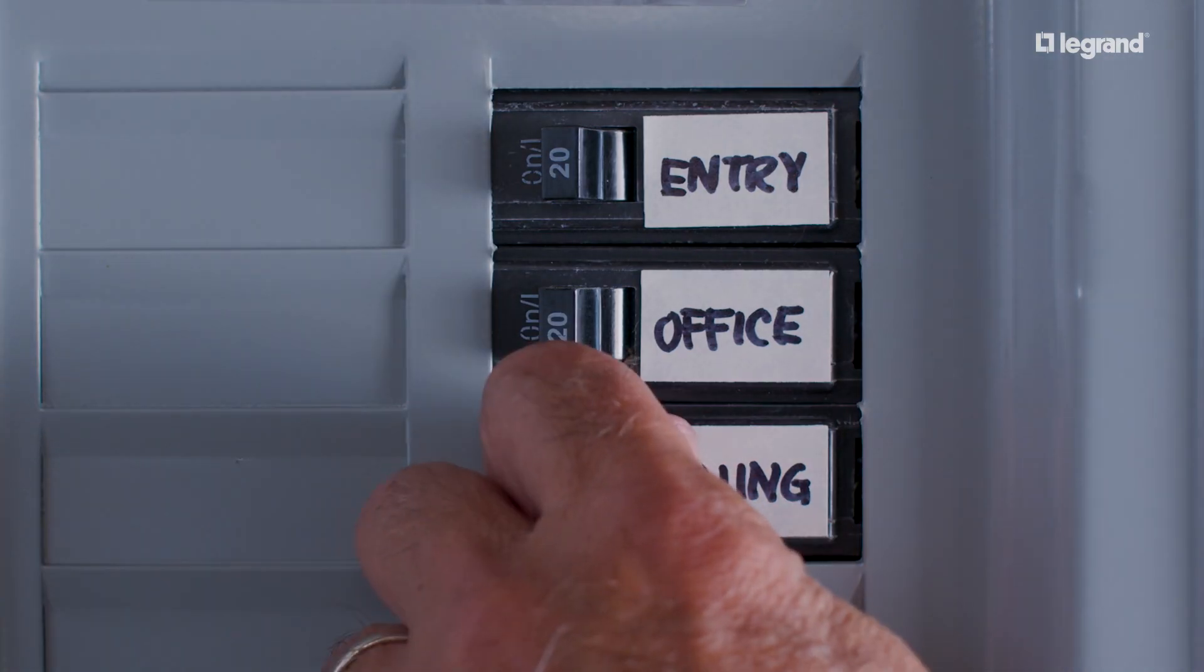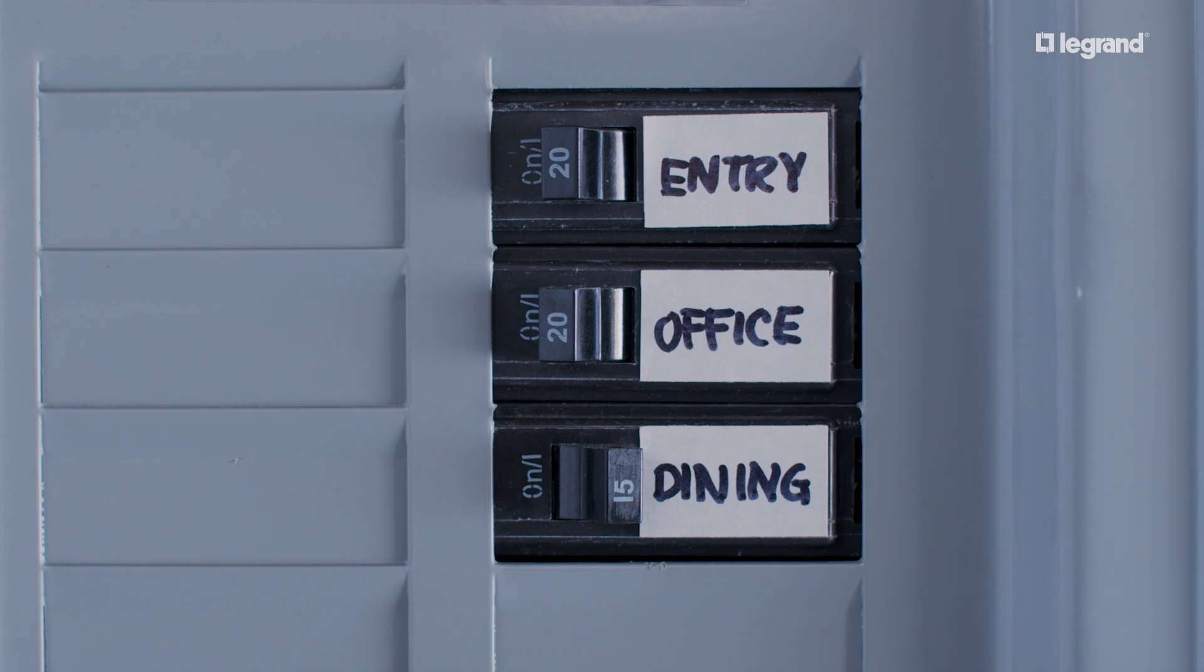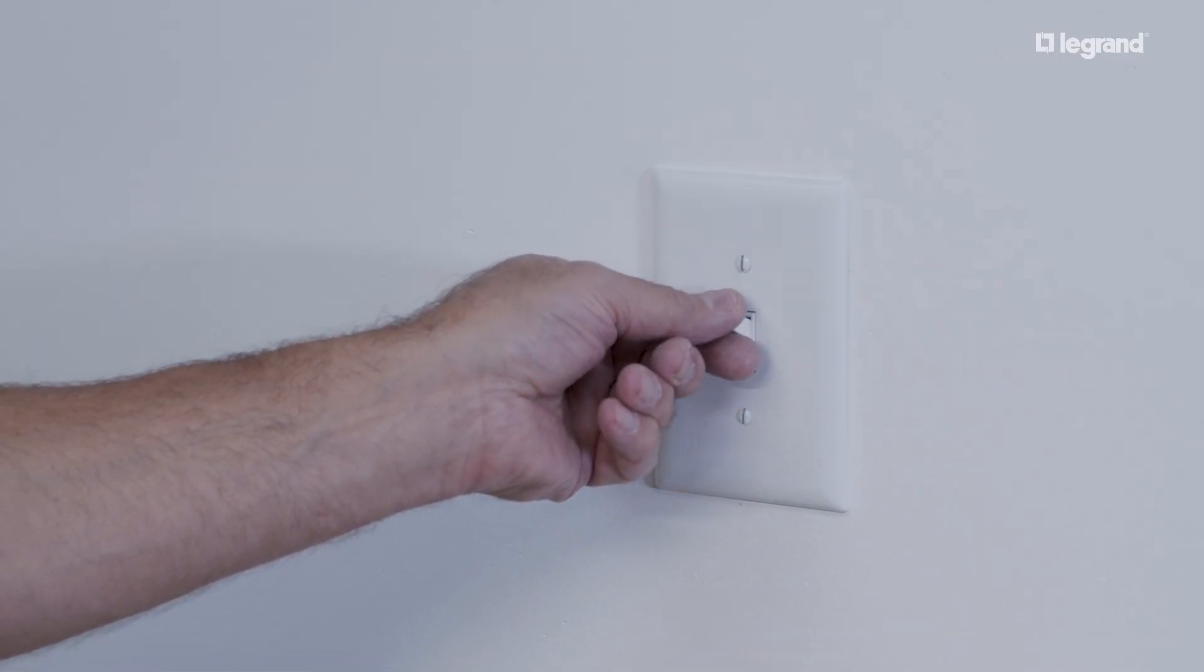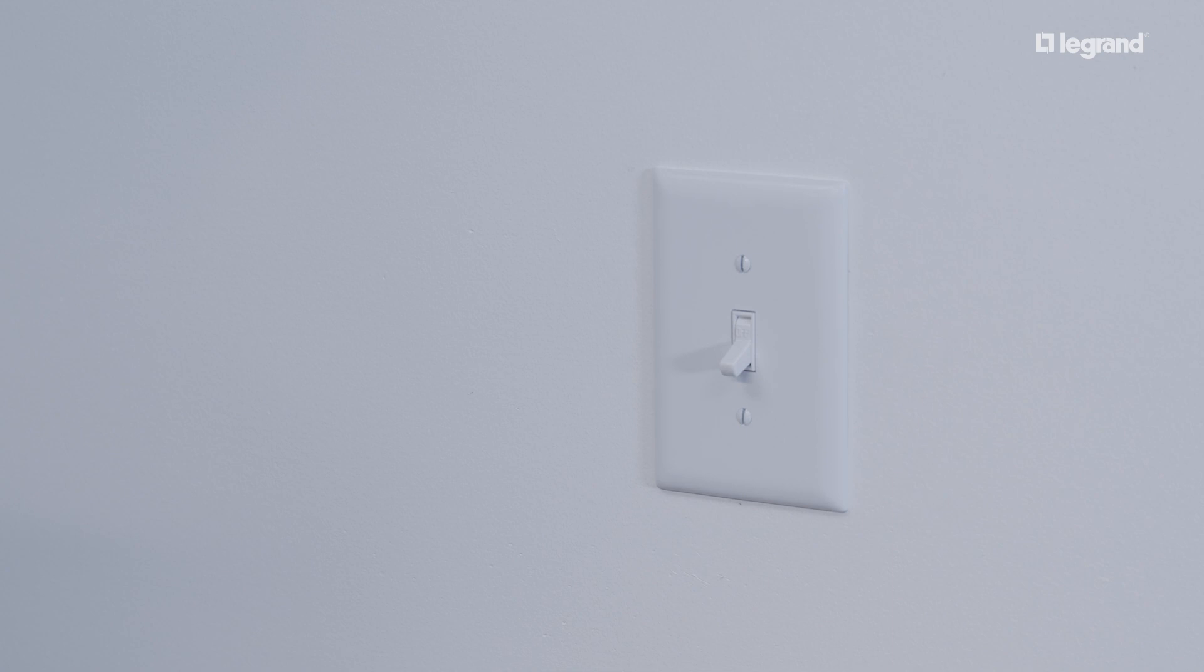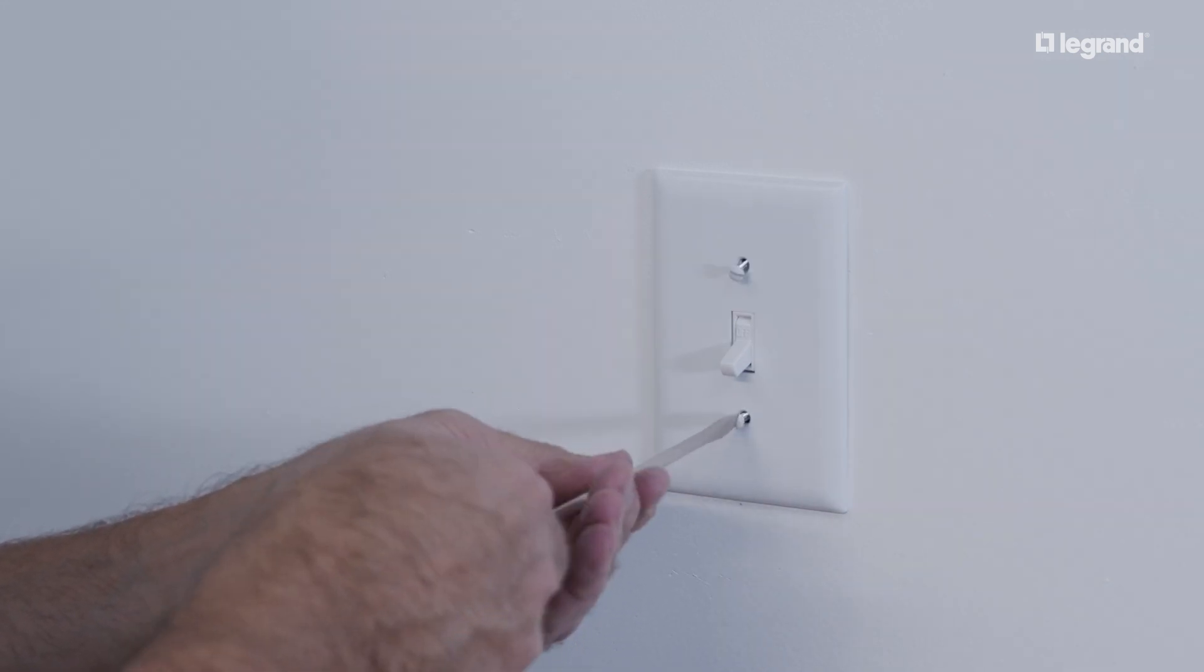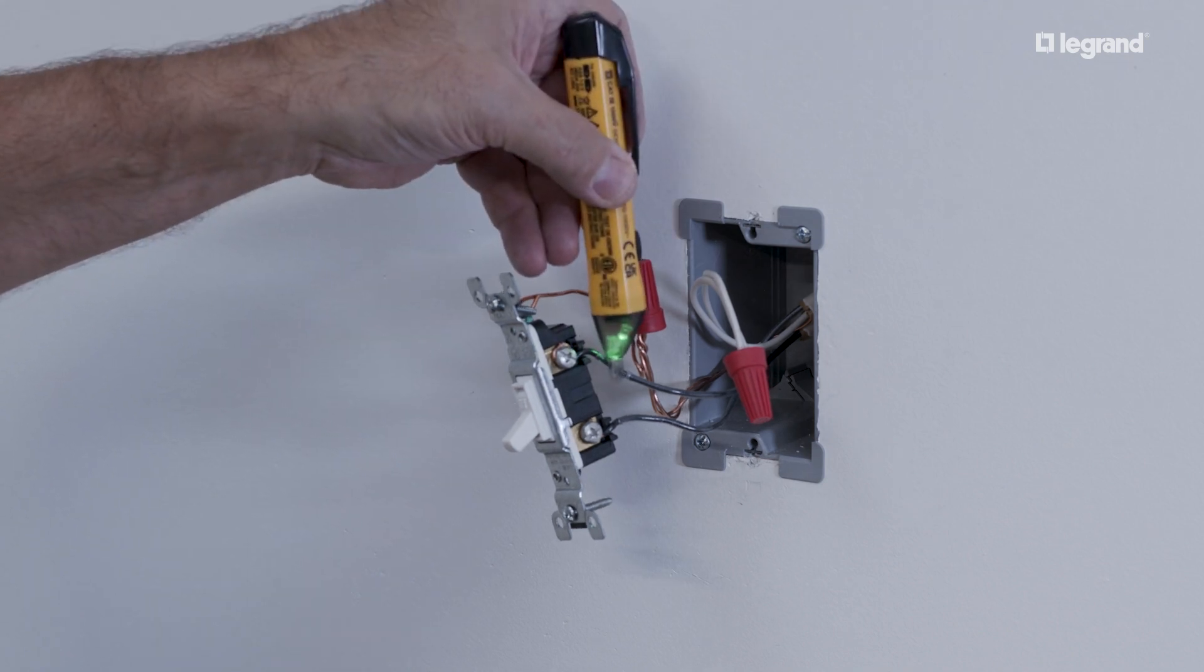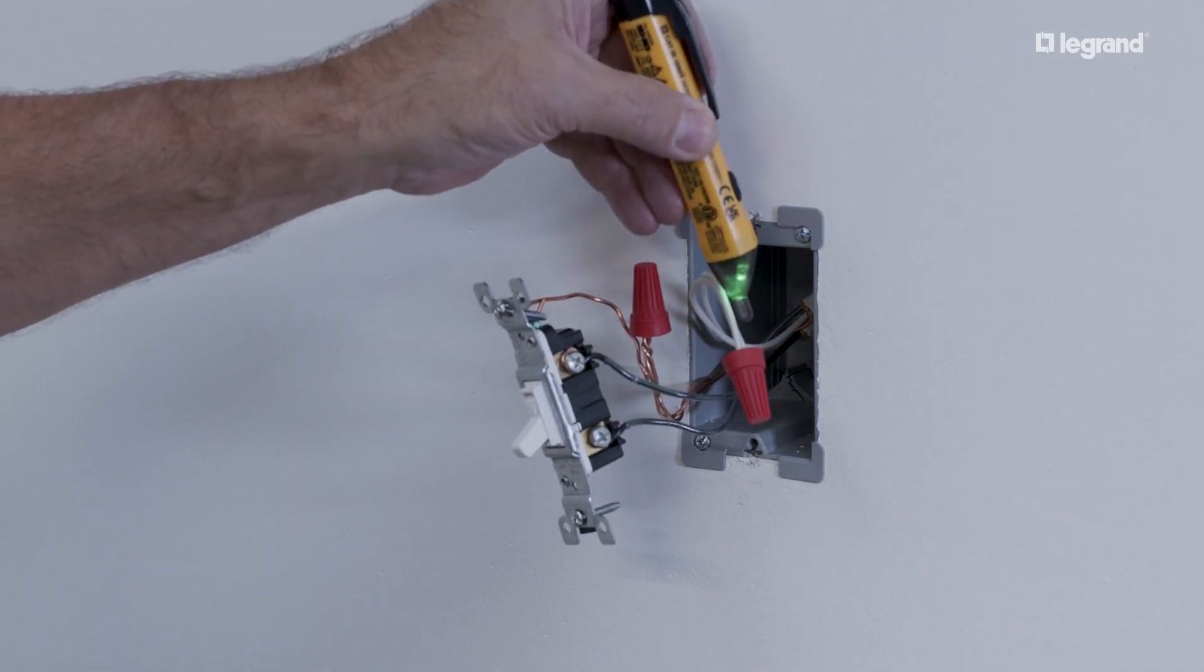To start, turn off the power to your existing device at the circuit breaker. Test your current device by turning it on and off to ensure no power is provided to the switch. Next, unscrew the existing wall plate and use a voltage tester to ensure no power is being provided at the switch location.